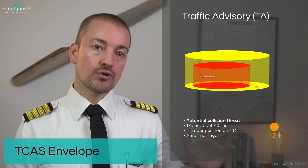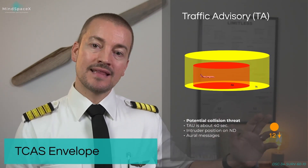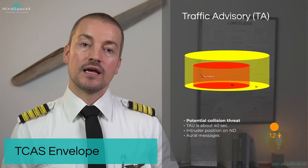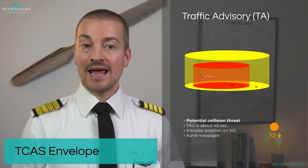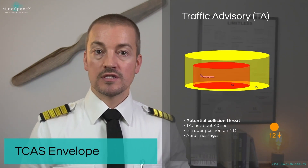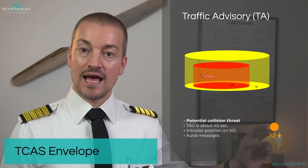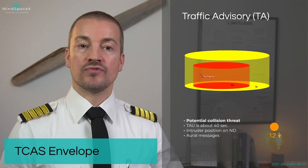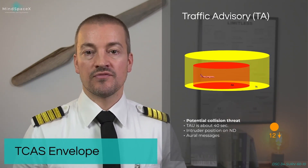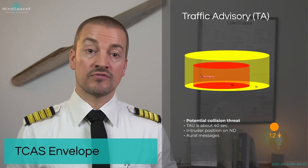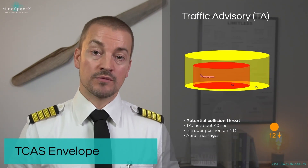Intruders are still shown on the ND, but they are now in amber, indicated by an amber circle, together with their altitude and rate of change if climbing or descending by more than 500 feet per minute.